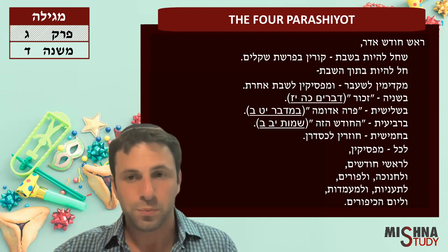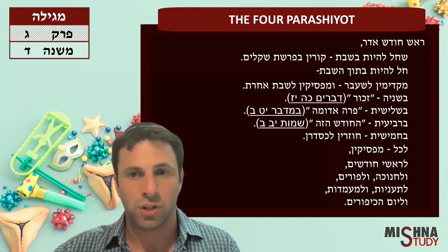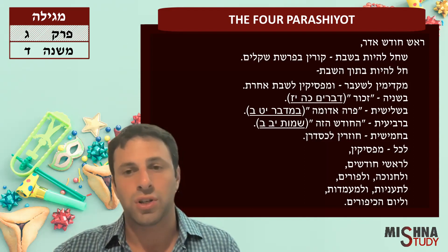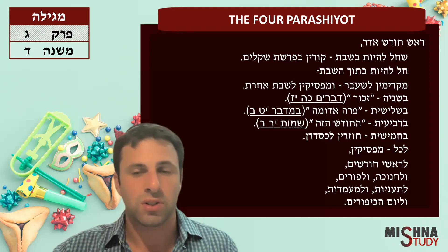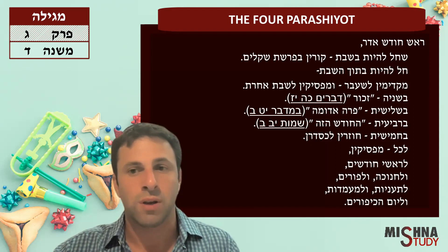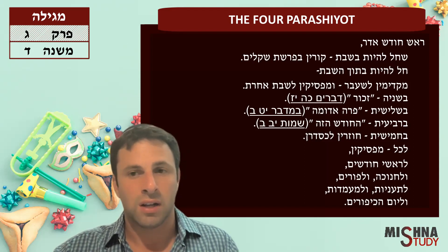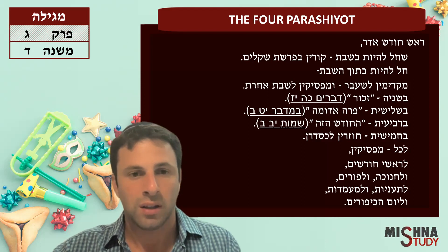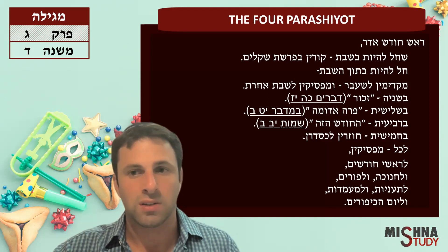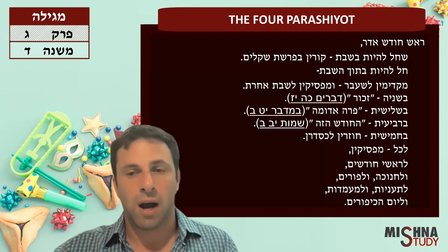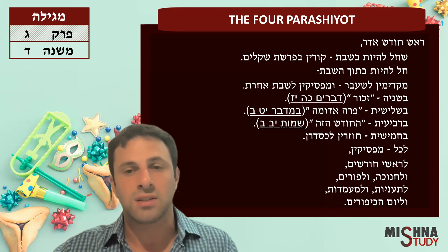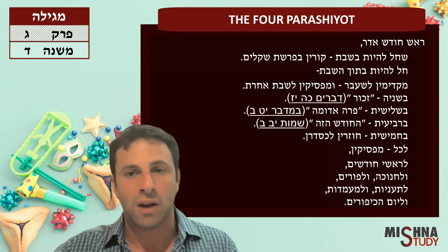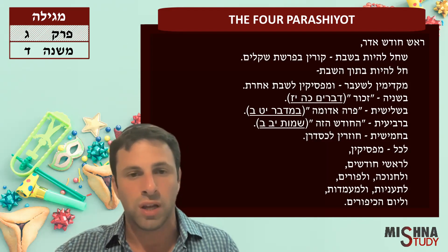B'Shelishit — Parah Adumah, in Parashat Chukat. B'Revi'it — HaChodesh Hazeh, HaChodesh Adar Dachem Rosh Chodeshim — that's the last week in Adar leading into Nisan. B'Hamishit — Chozrin L'Chesidran — you go back to your normal rotation.